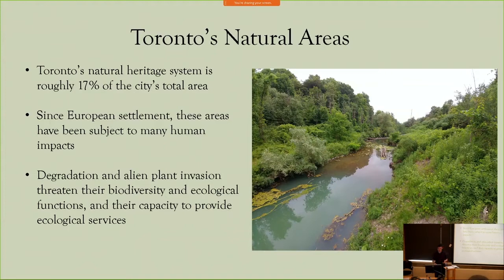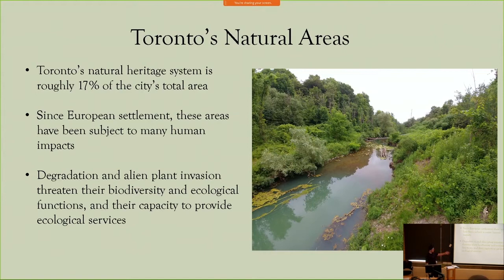Urban activity can take many forms; however, the result is a number of stresses that are placed upon Toronto's natural areas. These stresses can take the forms of air, water, and soil pollution, soil compaction, habitat fragmentation, and many others. The cumulative effect is a general degradation of the quality of Toronto's natural areas through a reduction in biodiversity and ecological functions, which then leads to inhibiting their capacity to provide a broad range of ecological services for the city's residents.